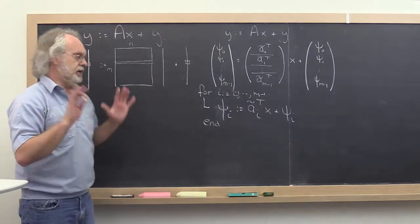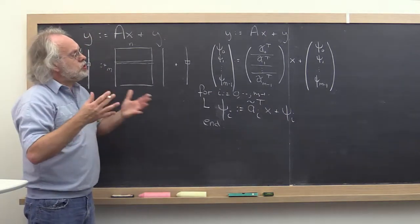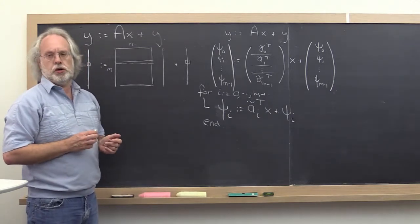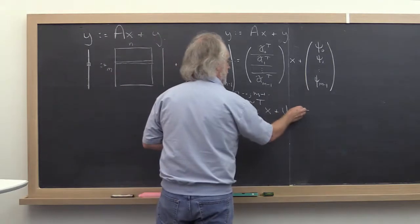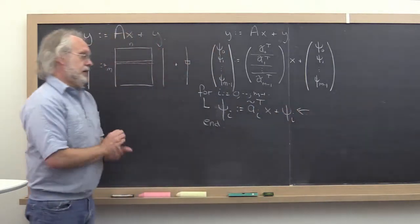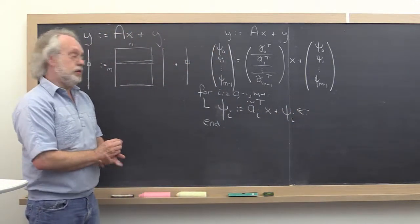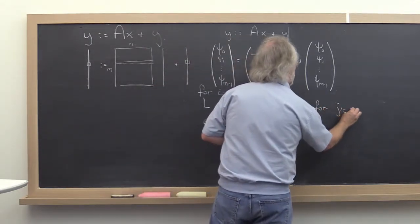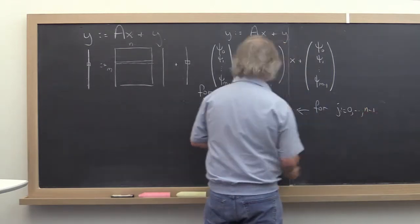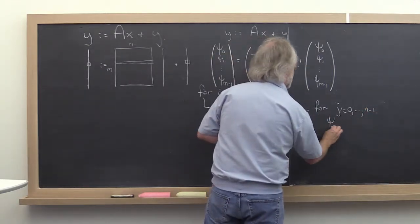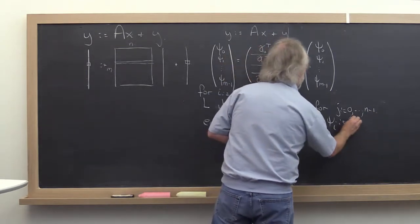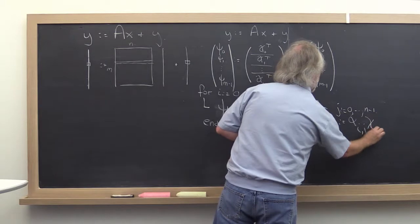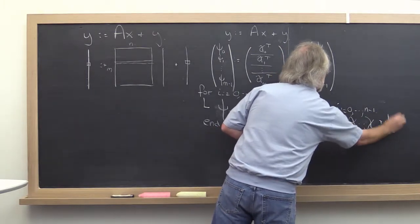You might ask yourself, wait a minute - when you were taught to implement matrix-vector multiplication, somehow there was a double loop that showed up. Well notice that now we're just hiding one of the loops inside of this dot product. This itself can be implemented by saying for j from 0 to n minus 1,